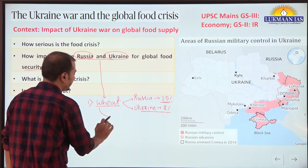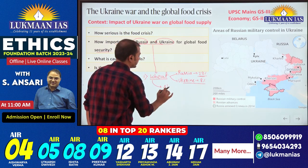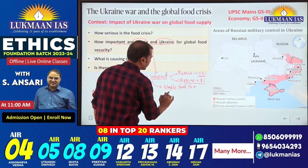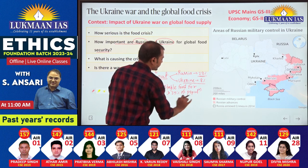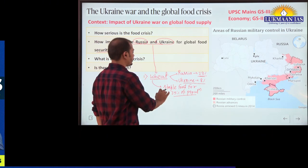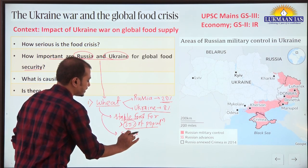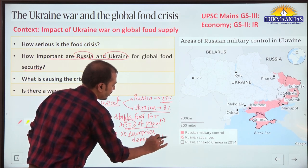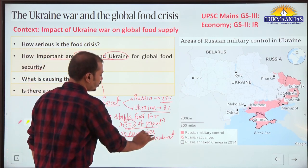You should know that wheat is a staple food for more than 35% of the world population - staple food meaning it is part of the daily diet, the primary food consumed. Also, more than 50 countries in the world are dependent on Ukraine and Russia for imports of wheat, so they will face more problems.